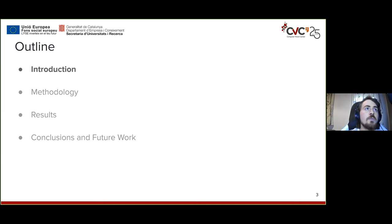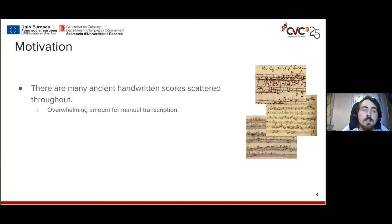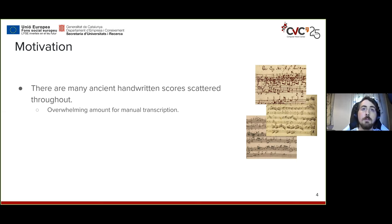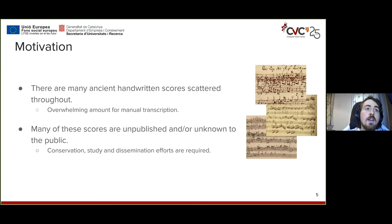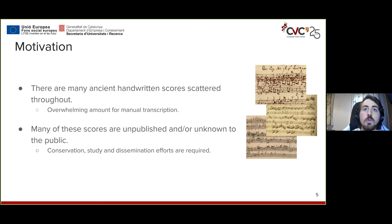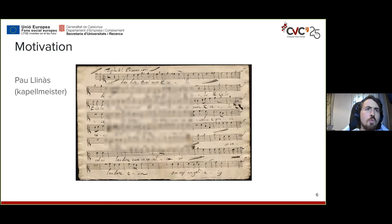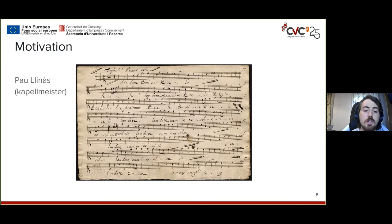Why would we try to recognize handwritten scores? The main reason is that there are many ancient handwritten scores scattered throughout the world — too many to transcribe manually. Therefore, OMR is a very nice solution for that problem. It is especially relevant because many of these scores are either unpublished or unstudied, mostly stored in archives such as churches throughout Europe. For this work we were provided with a few of these church samples.